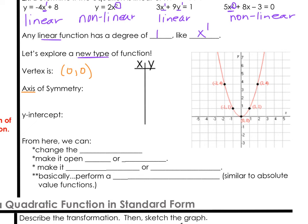An axis of symmetry gives you a boundary line where we can reflect one point to another point on the other side. The axis of symmetry goes right through the middle of the graph along the y-axis, and the equation for the axis of symmetry would be x equals 0. Also notice the y-intercept is at (0, 0) as well.